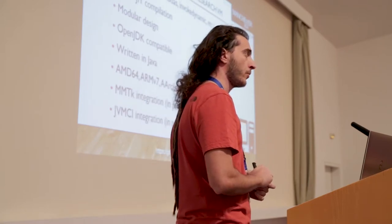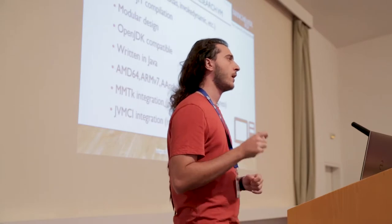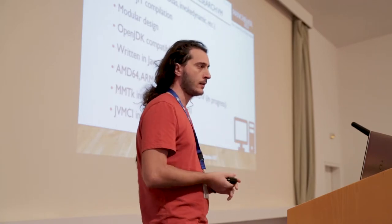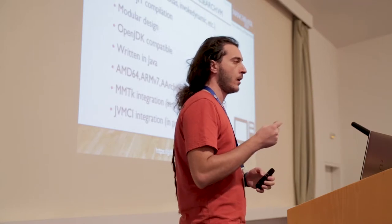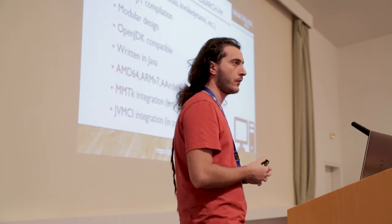There's also MMTK integration in progress. MMTK is a memory management toolkit initially developed for Jikes RVM. It allows you to build garbage collectors without re-implementing all the basic components — you take components from MMTK, combine them, and make a new garbage collector with less effort. We are also integrating the JVM Compiler Interface, which allows hooking different just-in-time compilers onto different JVMs — for example, using HotSpot's compiler on Maxine, or vice versa — running compiler experiments without modifying the JVM.